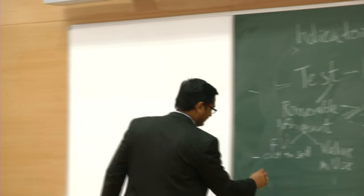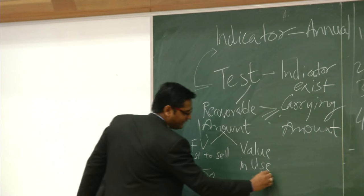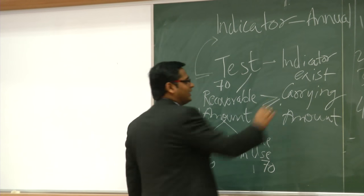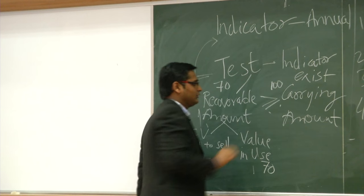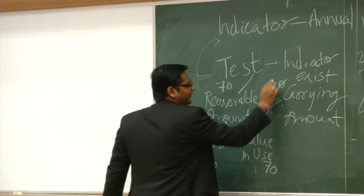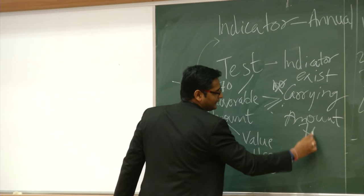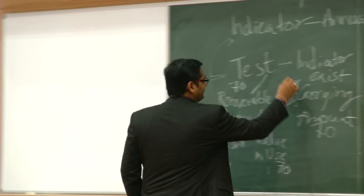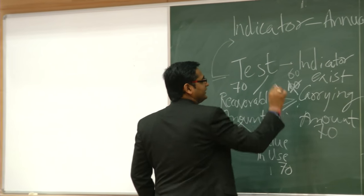If the recoverable amount is higher than or equal to the carrying value, there is no impairment. If it is lower, then there is impairment. For example, if fair value less cost to sell is 50 and value in use is 70, then recoverable amount is 70. If carrying amount is 100, there is impairment of 30 rupees — you bring it down to 70. If the carrying amount is already 60, then there is no impairment.